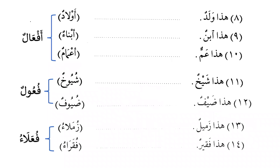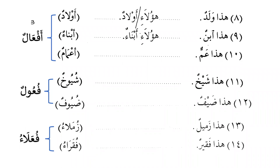Pattern 3 is أَفْعَال. هذا ولد — this is a boy — becomes هؤلاء أولاد. هذا ابن — this is a son — becomes هؤلاء أبناء. هذا عم — this is a paternal uncle — becomes هؤلاء أعمام. Alhamdulillah, we are learning different broken plural patterns.